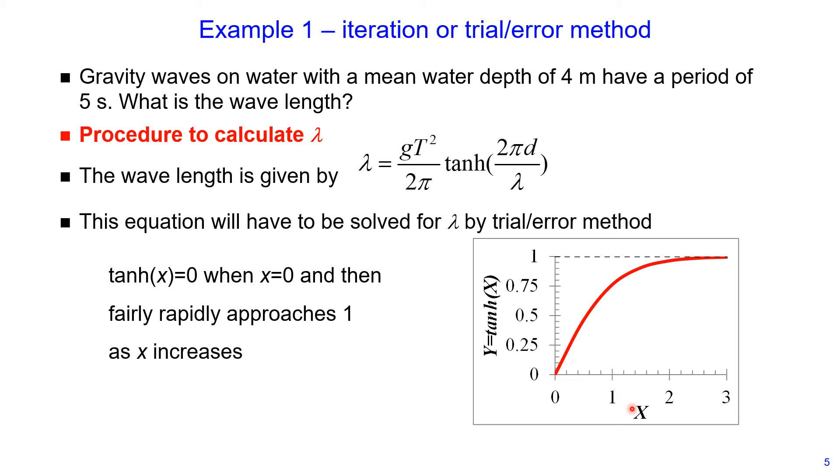And then with increase in x, hyperbolic tangent of x will rapidly increase and approach 1 as x increases. Therefore, we can say that if we take the hyperbolic tangent value to be around 0.75, this will give us a reasonable fast approximation. We can assume that hyperbolic tangent is equal to 0.75 and substitute this into this equation.